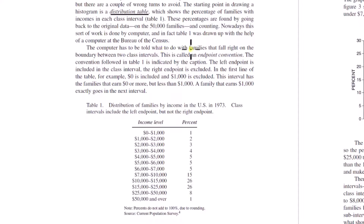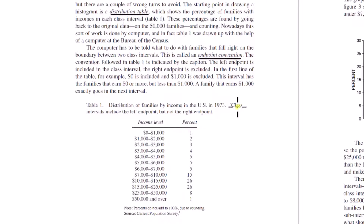The computer has to be told what to do with families that fall right on the boundary between two class intervals. What if a family has an income level of exactly $1,000? Do they go into this class interval or that one? This is called an endpoint convention. The convention followed in table one is indicated by the caption: the class intervals include the left endpoint but not the right endpoint. So if a family has a $1,000 per year income, it goes into the lower interval. You choose the endpoint convention for your histogram.